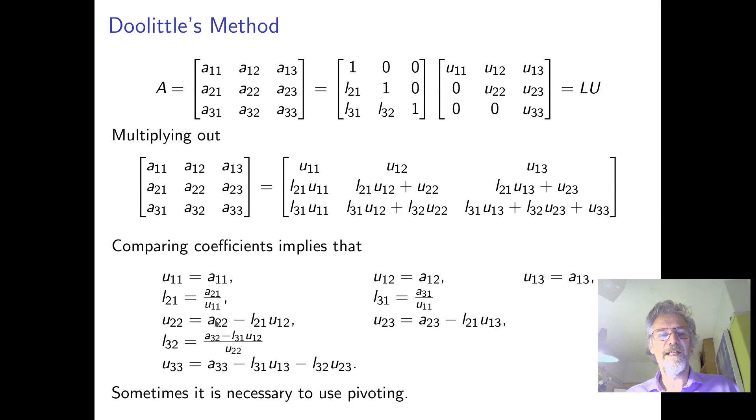And now we have to go along getting the other U's. And U22 is A22 minus L21, U12. So we see that we've got this A22 and we've subtracted something from it. And in this case, we get the A23 and we subtract something from it. So we already know U13 and we know U12. And we already know that L21. So we've got the U22 and U23. So L32 is A32 minus L31, U12 over U22. And finally, we get U33.